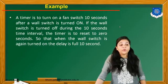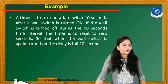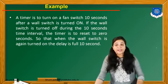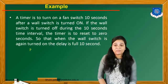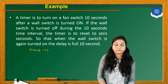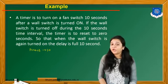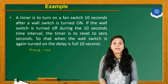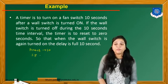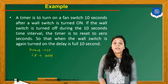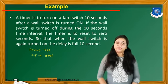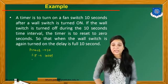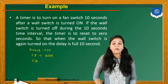So first of all, we have to identify the inputs and outputs for this particular system. The timer is to turn on the fan switch after 10 seconds, so we have to take the preset value as 10 seconds. Now the wall switch is our input signal — we can name the input IN01. And if the wall switch is turned off during the 10-second time interval, the timer is to be reset to 0 seconds. So the key condition is that we connect the enable or reset pin for this particular timer timing diagram.